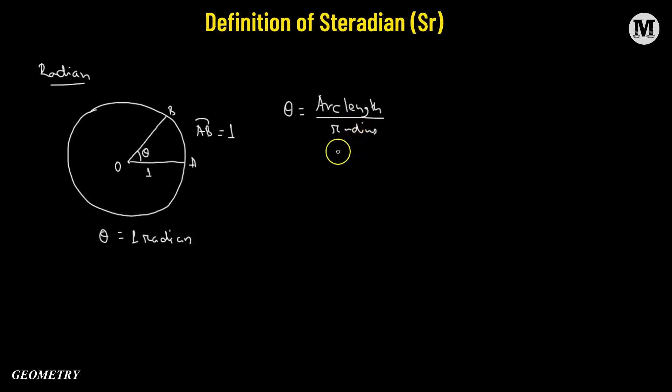Now, in order to define steradian, here what we are doing is, since we're considering a circle, so this is a two-dimensional representation. Now, we will go to the three dimension. We know that a circle transforms into a sphere in the three dimension.